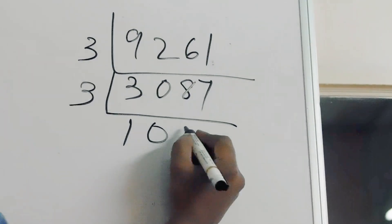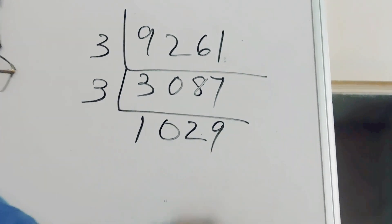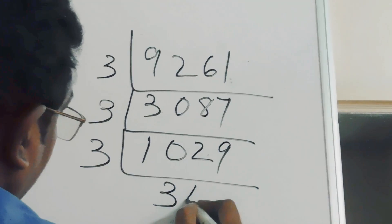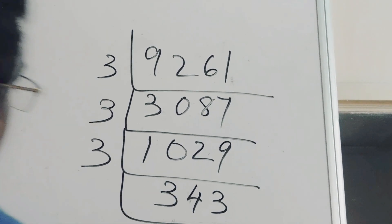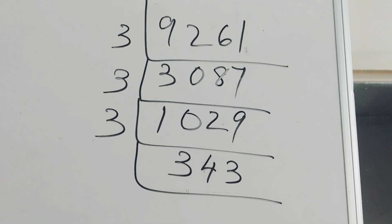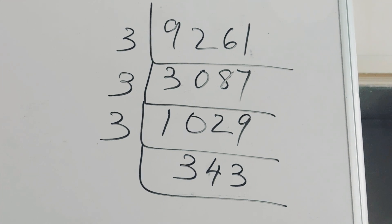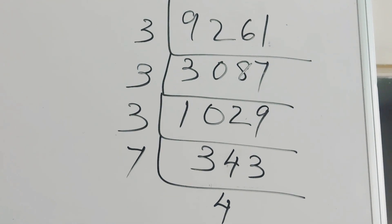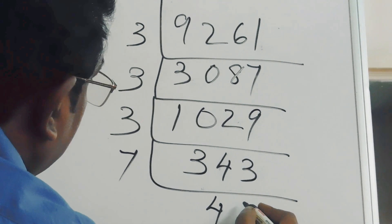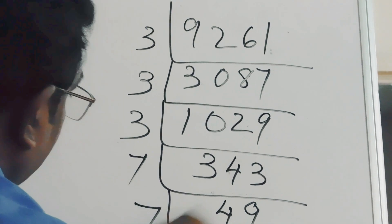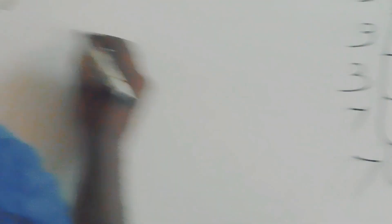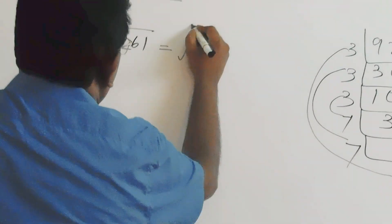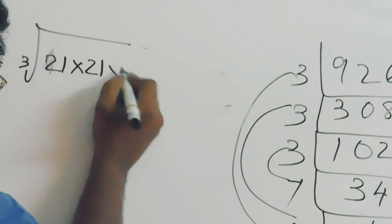3 times 4 is 12. Now, it is not possible with 3. We can do with 7. 7 times 4 is 28. Remainder is 63. 7 times 7 is 49. So, we get 21 into 21 into 21.